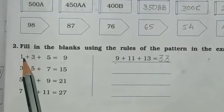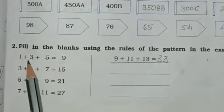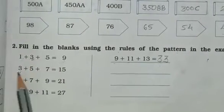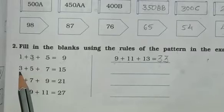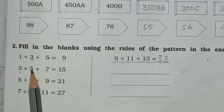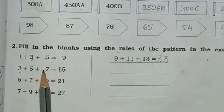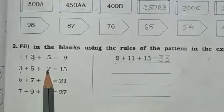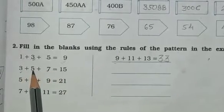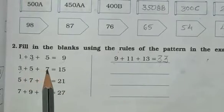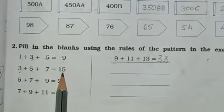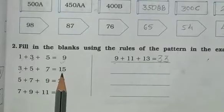यहां पर 1 से start किया था. अब next number 3. तो यहां से 3 से start करेंगे. 3 plus 5 plus 7 — 1 छोड़के, 5 के बाद 6 छोड़के 7. After 3 plus 5, 8 plus 7 is equal to 15. अब यहां last number 15 है.